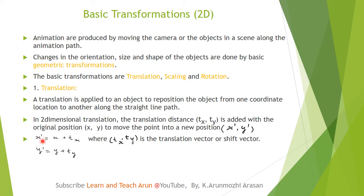Hello friends. In this video we will talk about two-dimensional basic transformations. Basic transformations are the basic geometry transformations. A graphics object has size, shape, and orientation — these are the basic properties. The basic transformations are translation, scaling, and rotation.